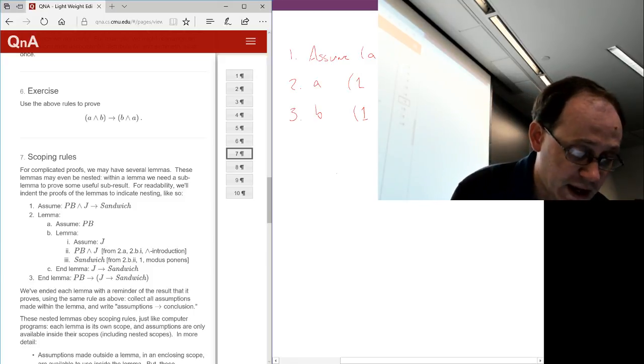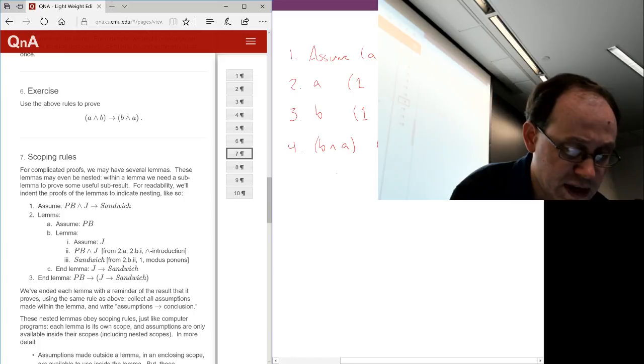Then we're going to do and introduction, right? So that's going to give us B and A, and that's by 3 and 2 in that order with and introduction.